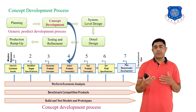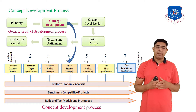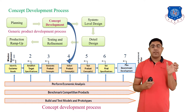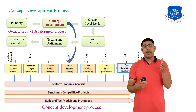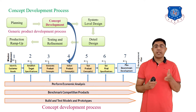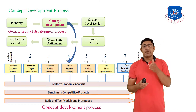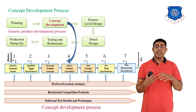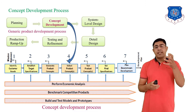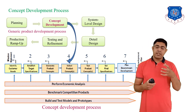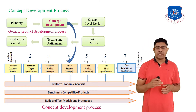We establish target specifications according to the mission statement. The next step is to develop or generate the product concept. After that, the next step is to select the product concept — in step four we select the best promising concept which was generated in step three. Once we select the best product concept, the next step is to test that selected concept, which is step five.